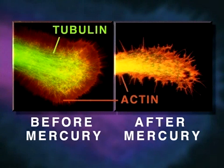Shown here is a neurite growth cone stained specifically for tubulin and actin, before and after mercury exposure. Note that the mercury has caused disintegration of tubulin microtubule structure.